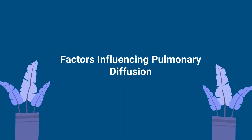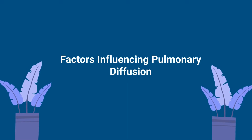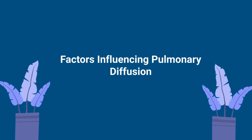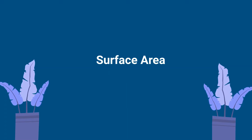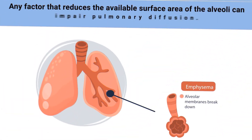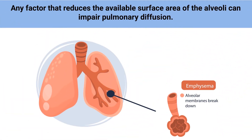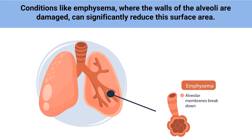There are certain factors that can influence pulmonary diffusion. The first is surface area. Any factor that reduces the available surface area of the alveoli can impair pulmonary diffusion. Conditions like emphysema, where the walls of the alveoli are damaged, can significantly reduce the surface area.